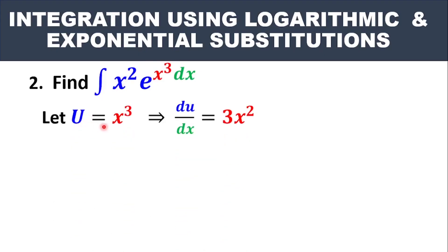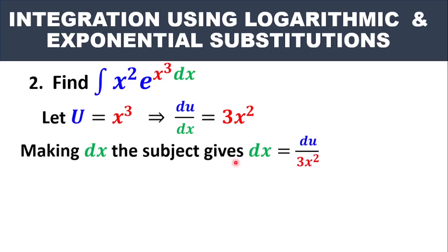So we say U = x³. Now differentiate U with respect to x: dU/dx = 3x². The next step is to make dx the subject, and we get dx = dU over 3x². This means in place of x³ we put U, and in place of dx we put dU over 3x². These are the important substitutions we need to make.